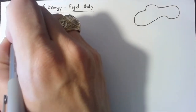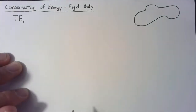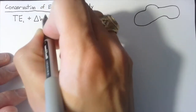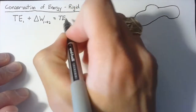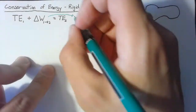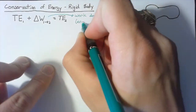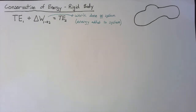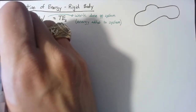The conservation of energy equation doesn't change in the most general sense from the particle system. We have some total energy at state one plus some amount of work being done on the system between the two states, and that is going to be equal to the total amount of energy at state two. The work here is the energy added to the system. Really what I'm interested in is how to calculate the total energy in a system.